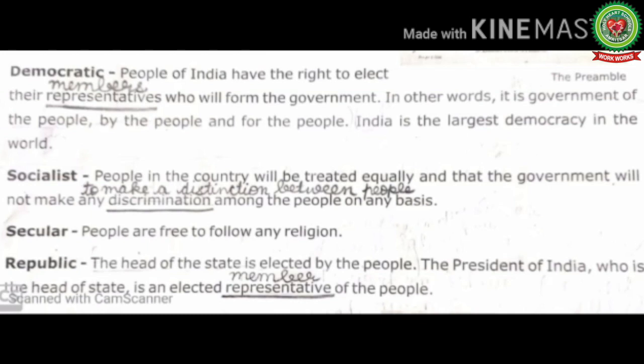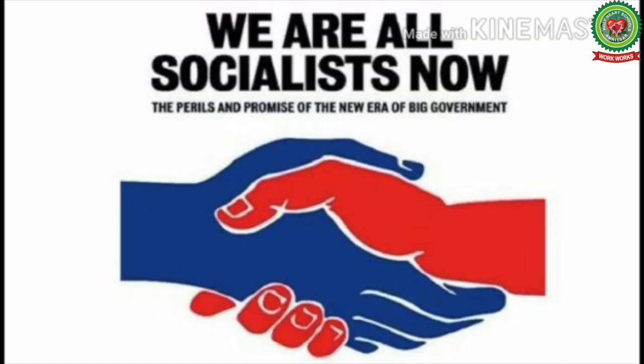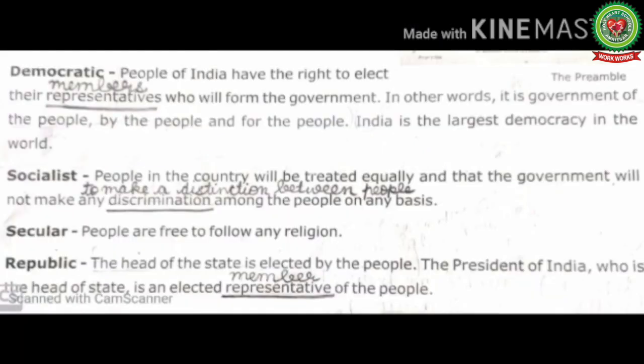Next is Socialist: people in the country will be treated equally and the government will not make any discrimination among the people on any basis. Discrimination means to make a distinction between people, or in other words, equal distribution of the country's wealth and national resources without any distinction on the basis of caste, color, and creed.